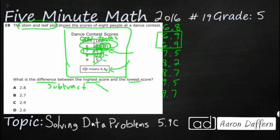So what we need to do is find the difference between the highest and the lowest score — that is actually called the range. Simply find the highest, find the lowest, subtract. That is a measure of spread, telling you how far apart the data is. Our highest number is 9.7 and our lowest number is 6.8. We are going to need to regroup a little bit — let's bring that decimal down.